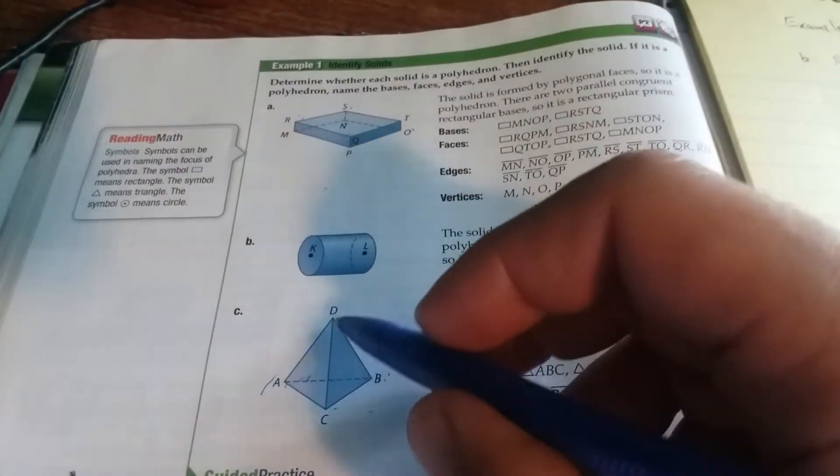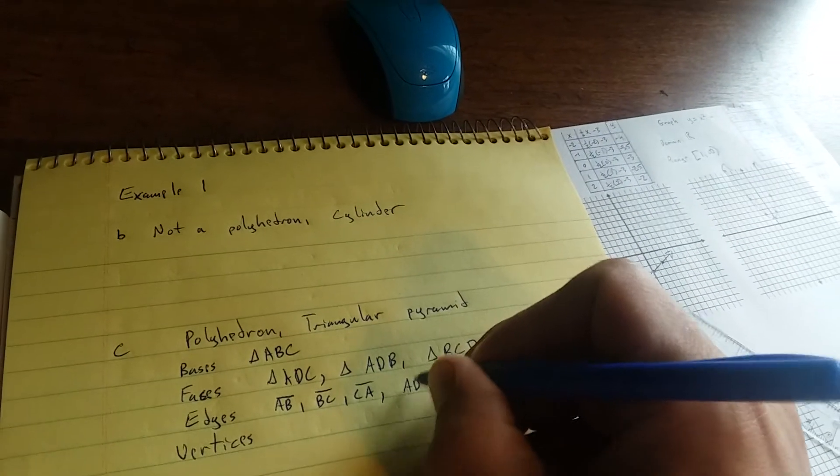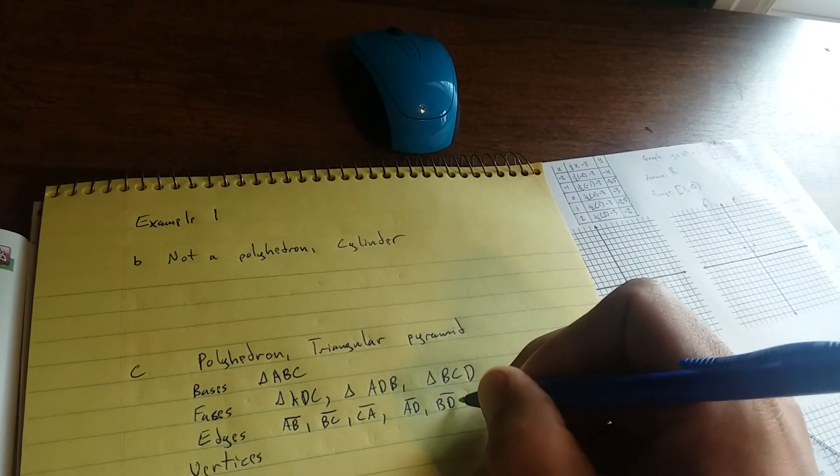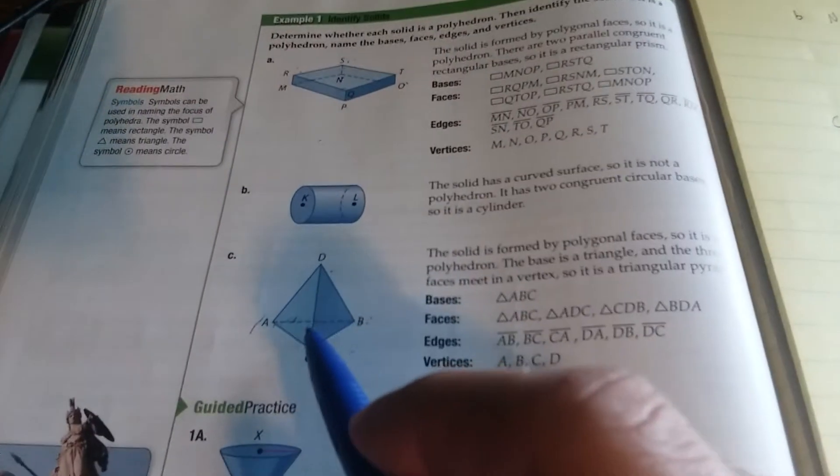do AD, BD, and CD. Segment AD, segment BD, and then segment CD. And then my vertices are just the corners A, B, C, D.